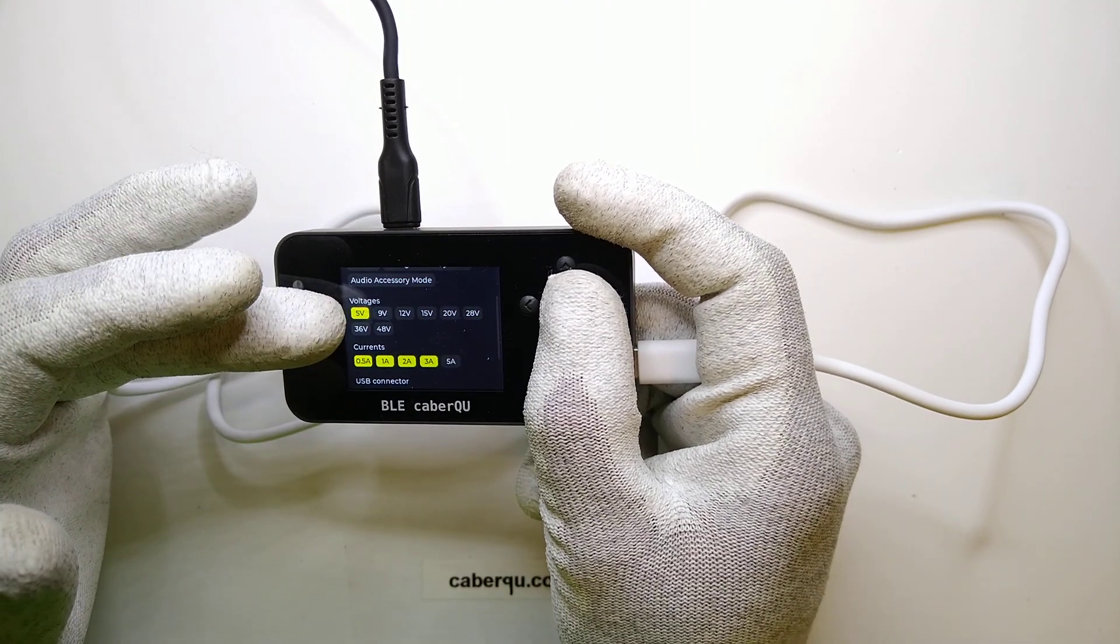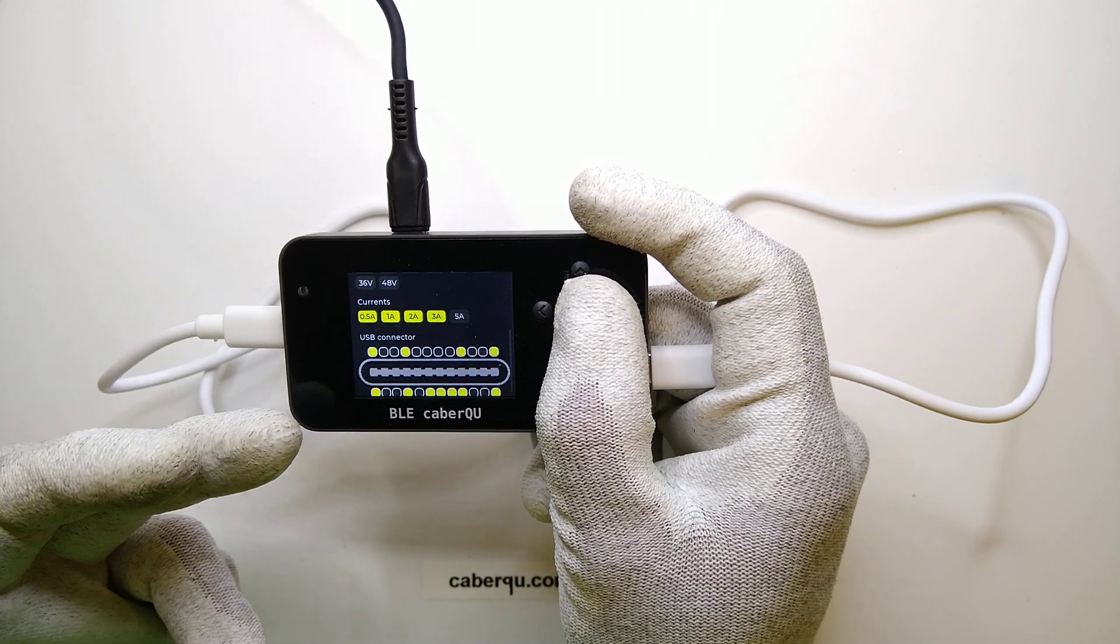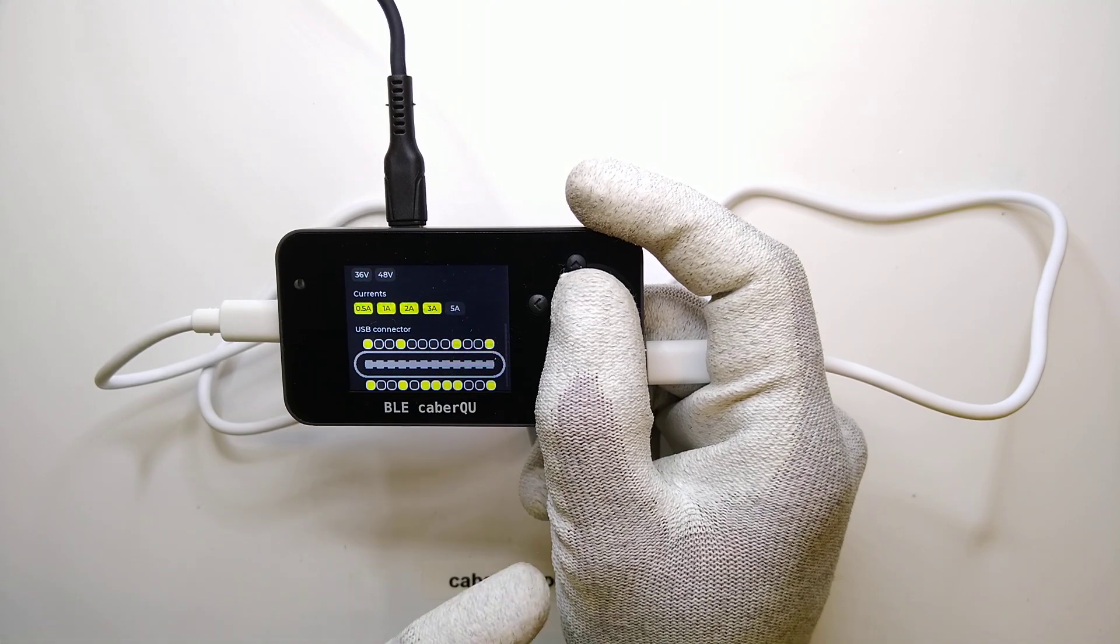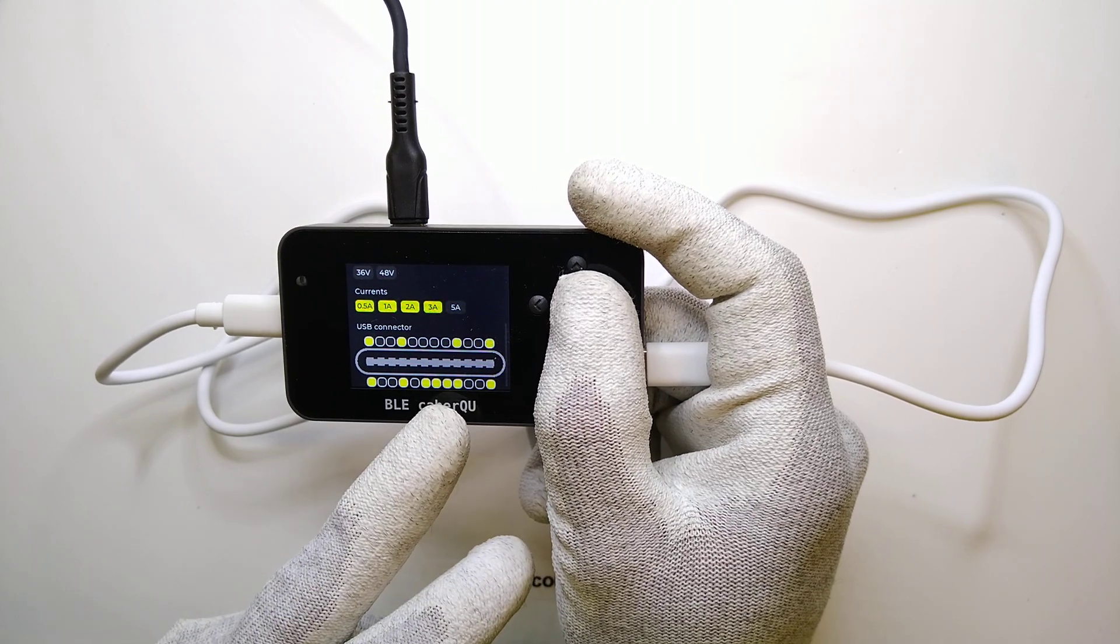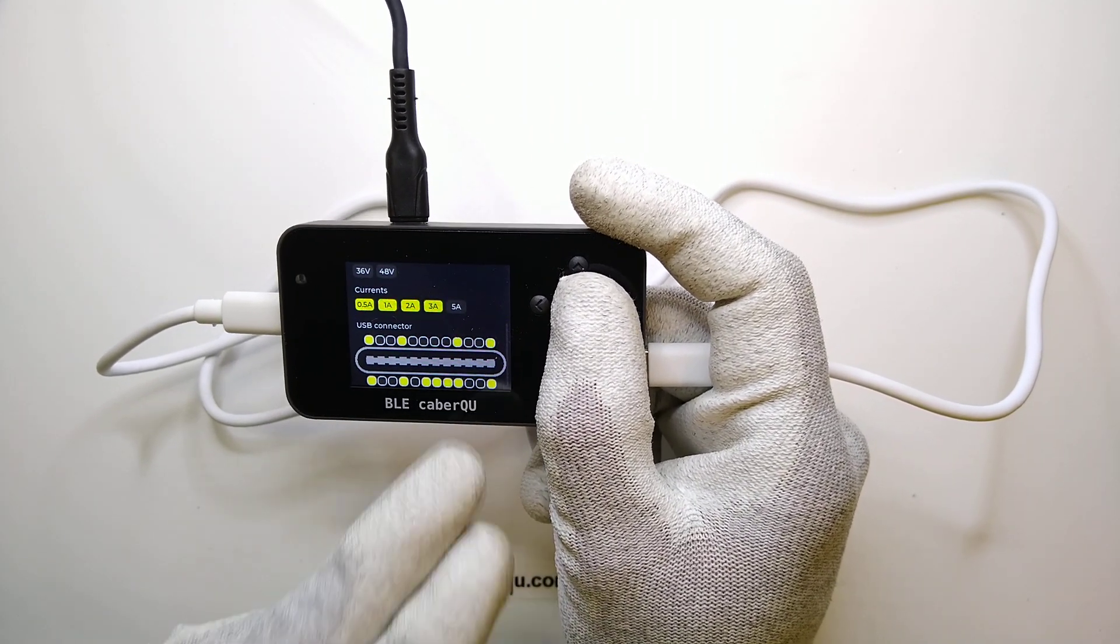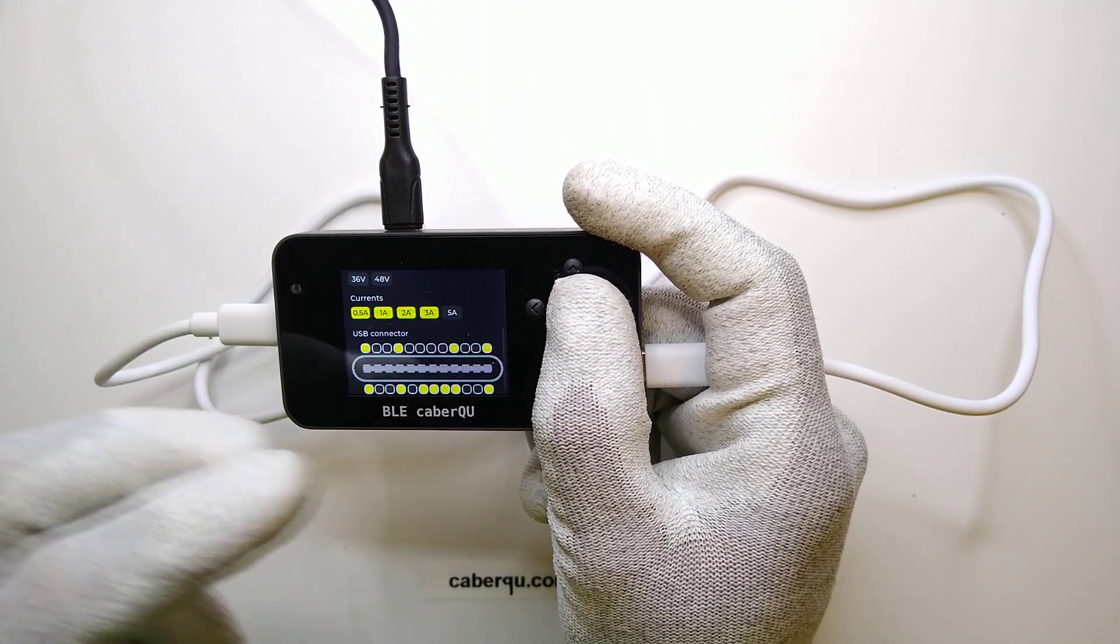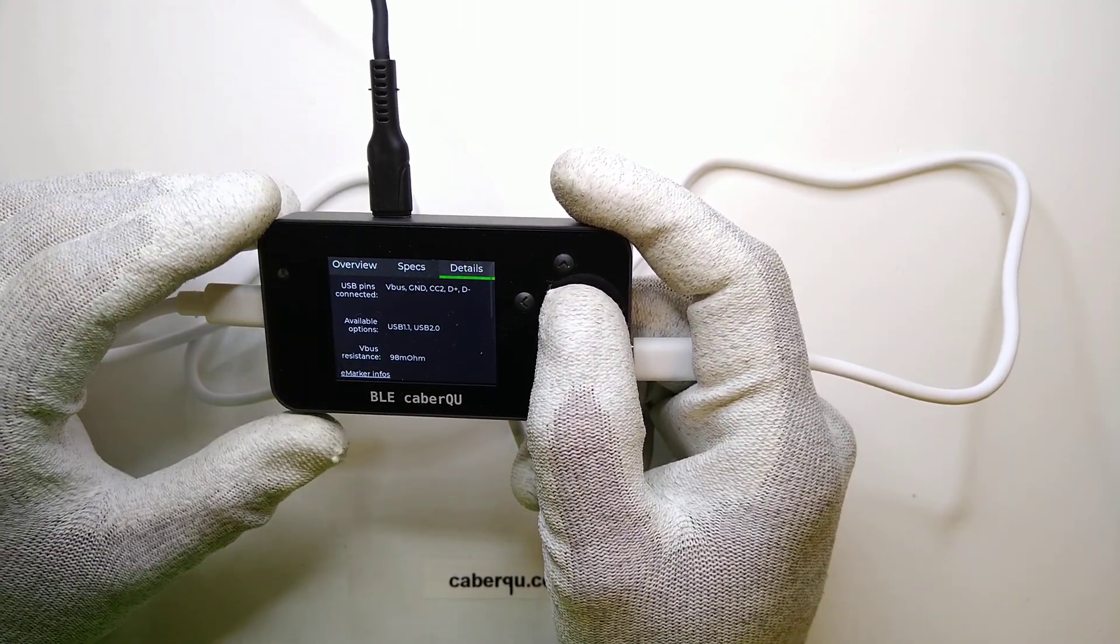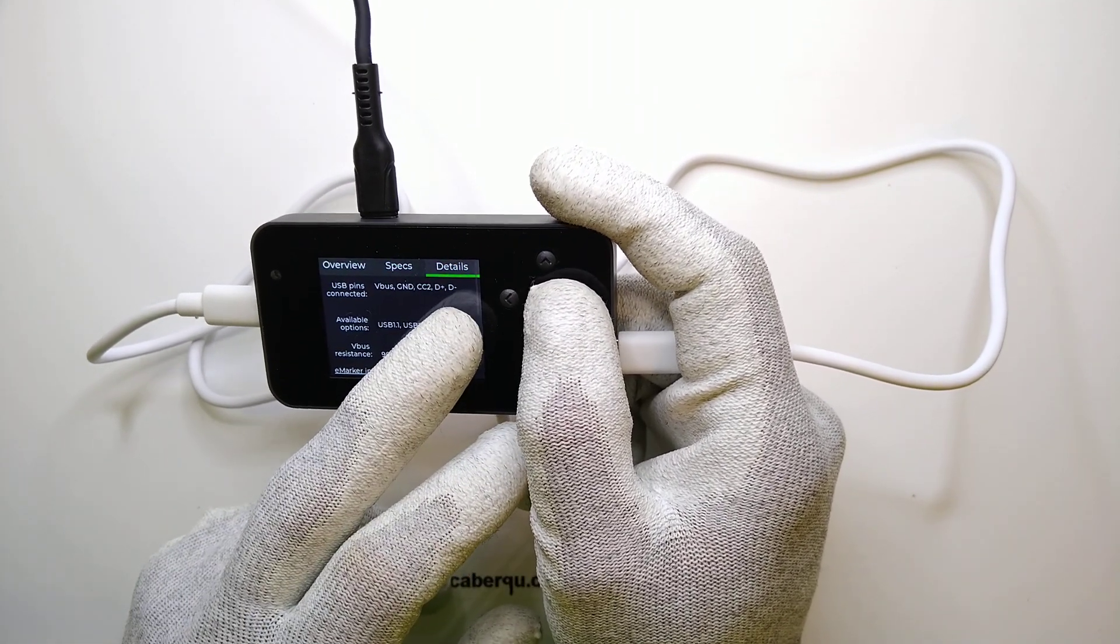It's a USB 2 cable at 480 megabits per second. It could do 20 volts theoretically and everything from 0.5 to 3 amps. If you take a look at the pin readout, it's definitely just the cheapest USB cable you can manufacture where you have ground and V bus connected as well as D plus and D minus for the USB 2 connection and one of the CC pins.